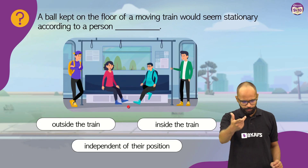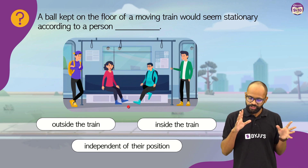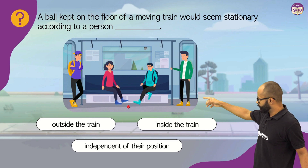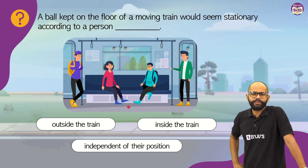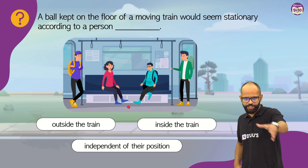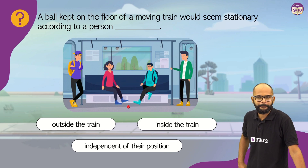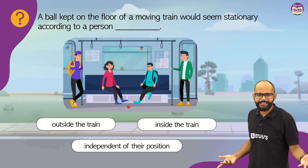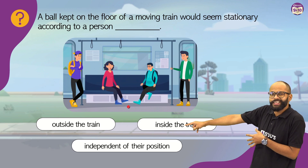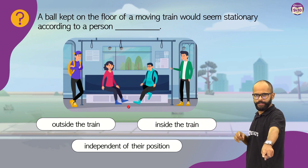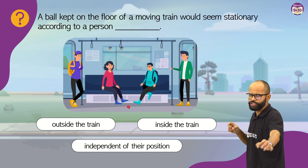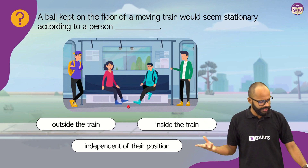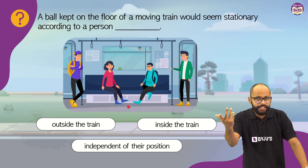A small question for you: a ball kept on the floor of a moving train would seem stationary according to which person — someone outside the train, inside the train, or independent of their position? If you are watching me right now, write this answer in the comments section or live chat. Obviously, for the people inside the train, the ball is not moving. Why? The ball is there — time passes, one second, two second, three second — but the ball is not changing position. The ball is at rest from my frame of reference.